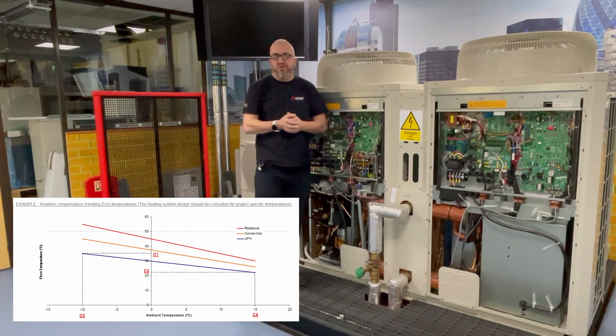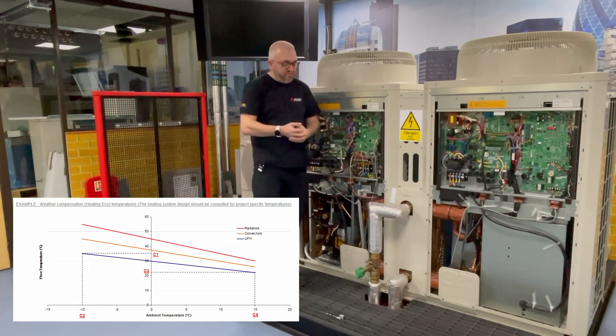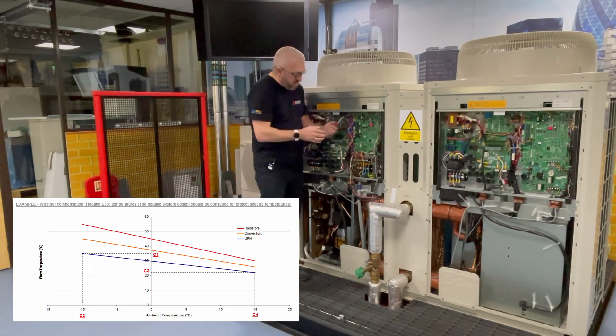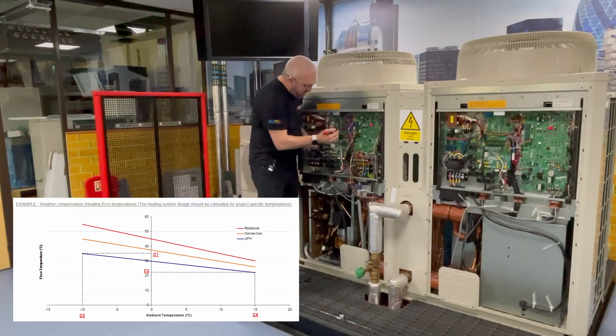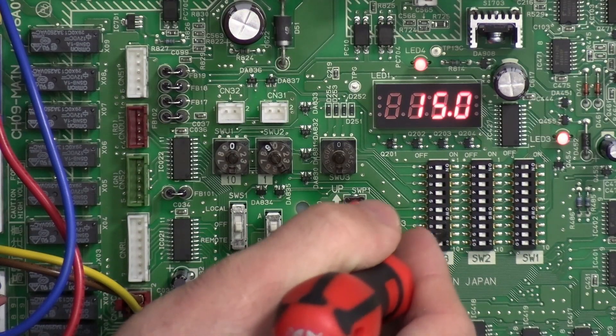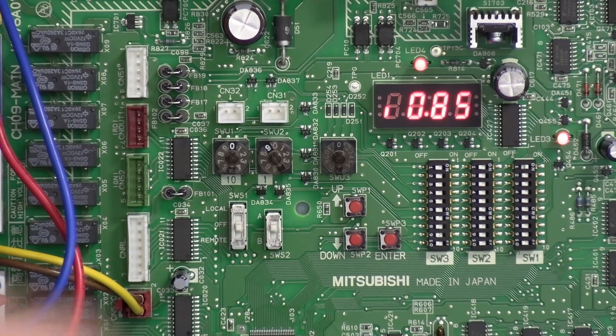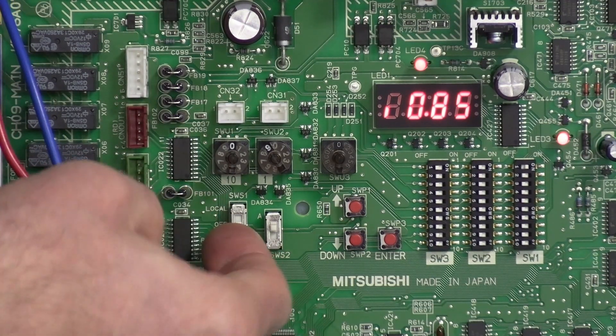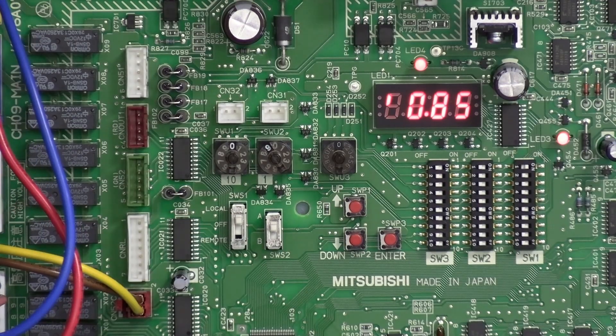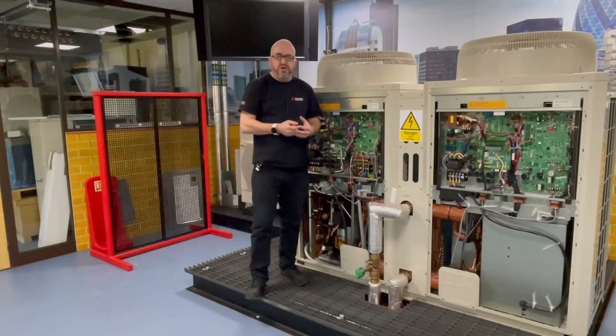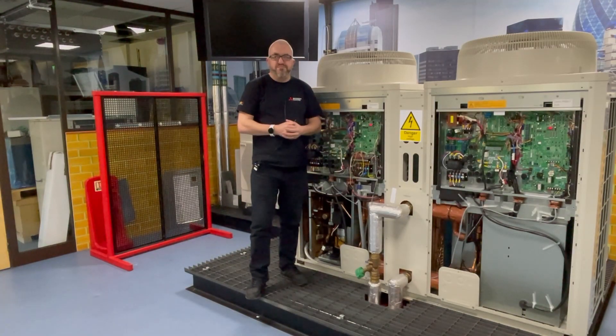So once you're happy with your settings, quite simply all we're going to need to do is SW3 number nine back to the off position. And then you can set the SW S1 switch back to local. That's when you operate off the local controller, and that's all set for you.